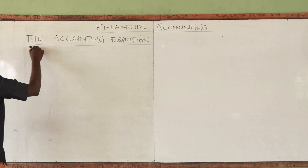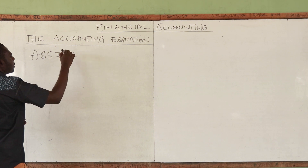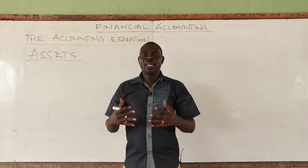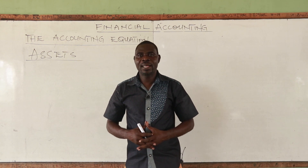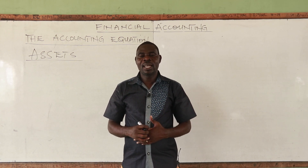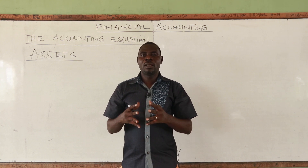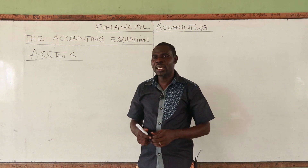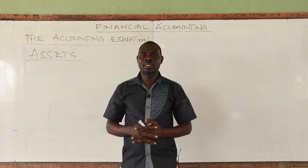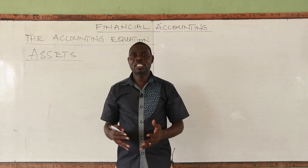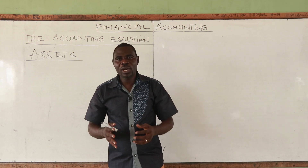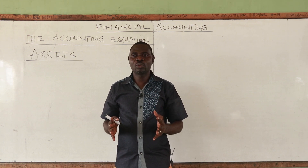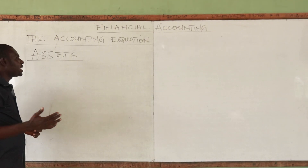Let's look at assets. An asset is a resource controlled by an entity as a result of a past event, and from which economic benefits are expected to flow to the entity. When we talk about assets, we are referring to resources that are controlled by the business and from which future economic benefits are expected. We are basically talking about the properties of the business.